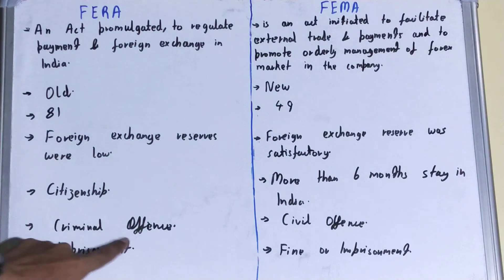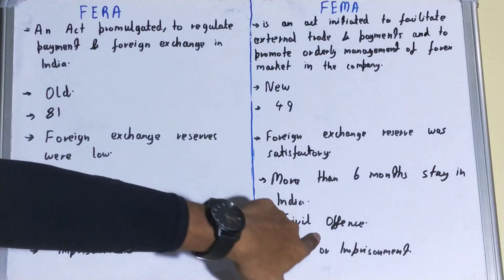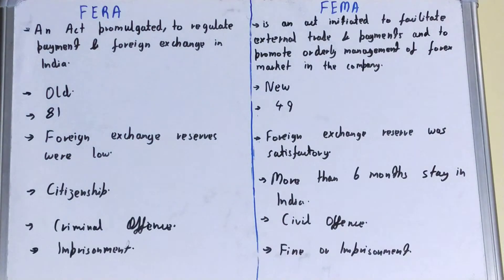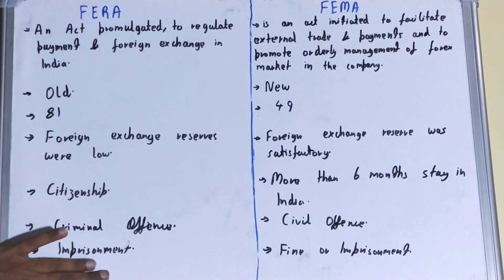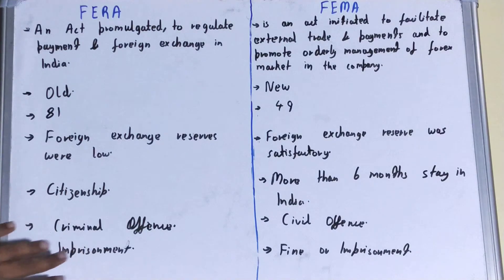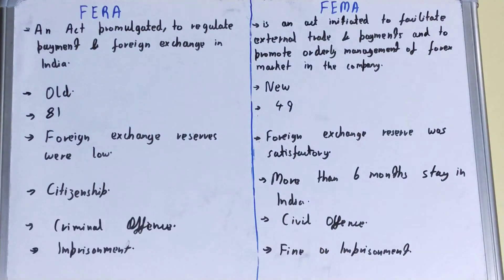Regarding violations, a violation under FERA is treated as a criminal offense, whereas a violation under FEMA is treated as a civil offense. As for punishment for contravention, under FERA it is generally imprisonment, while under FEMA it is a fine or imprisonment.